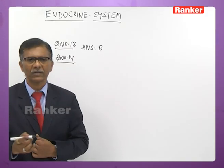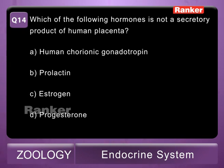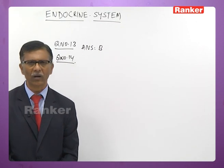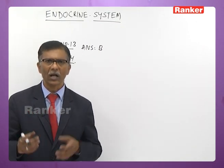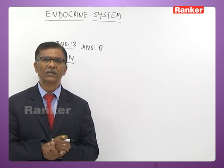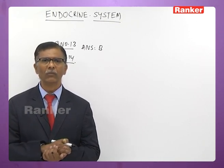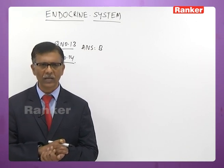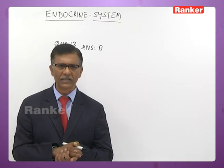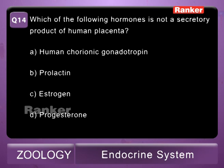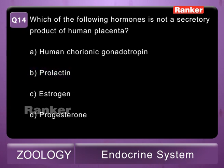Fourteenth question: which hormone is NOT a secretory product of the human placenta? A - human chorionic gonadotrophin (HCG), B - prolactin, C - estrogen, D - progesterone. HCG is used as a pregnancy stabilizing hormone and can establish pregnancy from urine. Prolactin is not secreted by the placenta — it is secreted by the anterior pituitary. Estrogen and progesterone are both secreted by the placenta. The correct answer is B — prolactin.